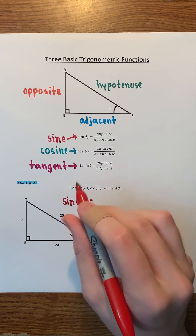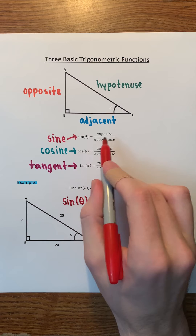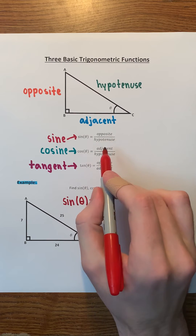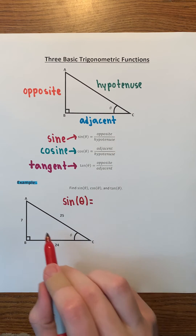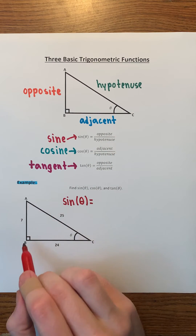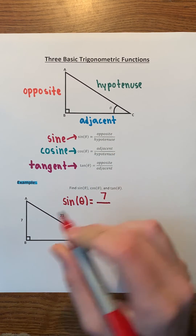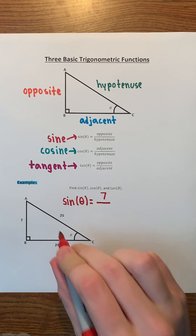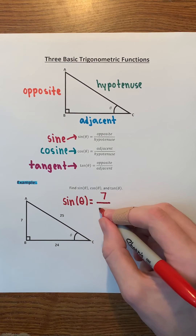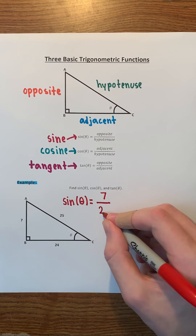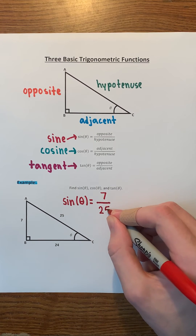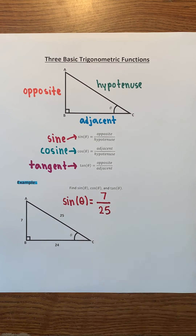Remember that sine of theta is opposite over hypotenuse. The side opposite the angle has a length of 7, and the hypotenuse has a length of 25, so sine of theta is 7 over 25.